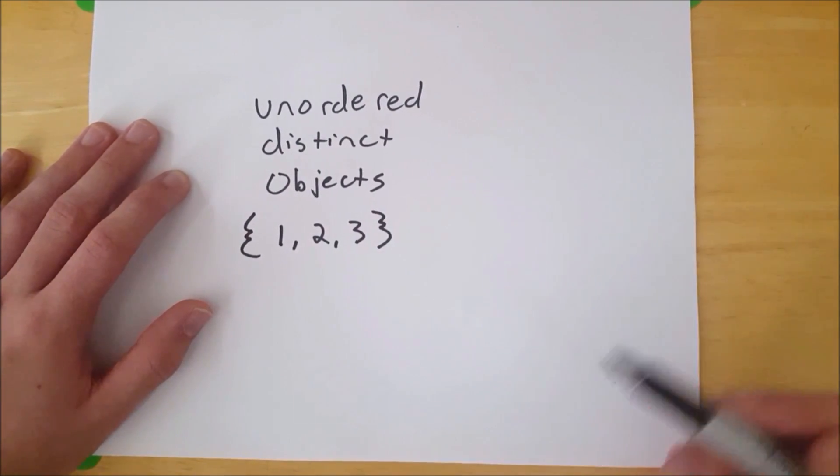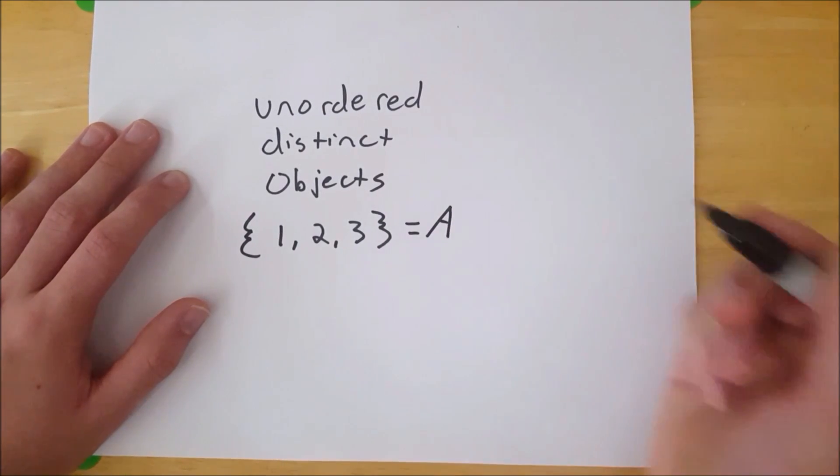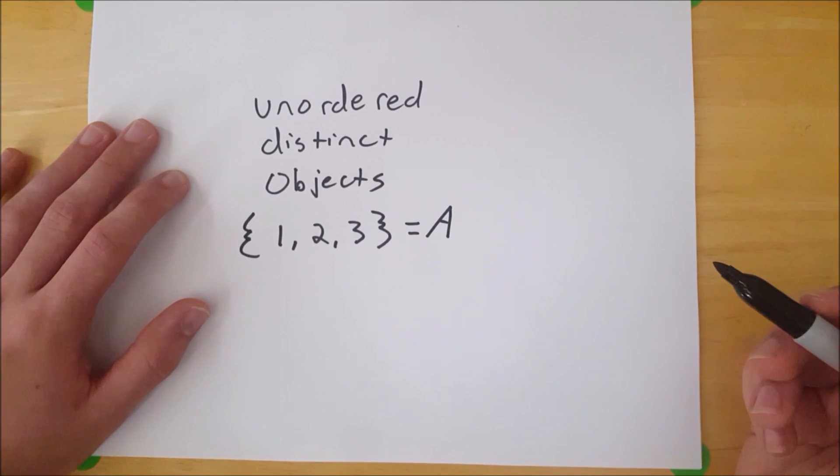And how would you write that in math terms? Well, first you need to name the set. And sets are generally named with capital letters. It's not a rule you have to follow, but it's generally considered good form. So we're going to name this set Big A. And Big is an easy way to refer to capital letters—Big A, little a—a lot easier than uppercase and lowercase.